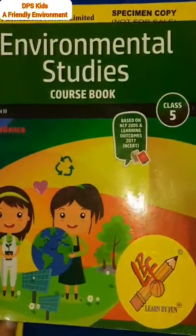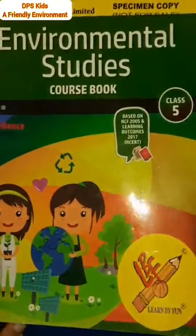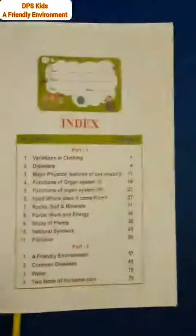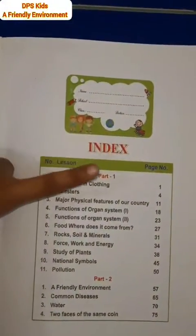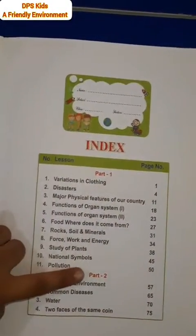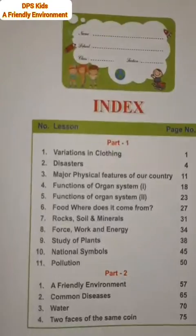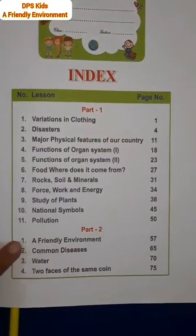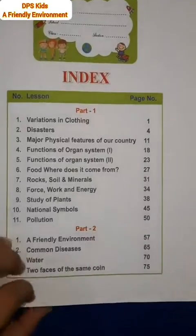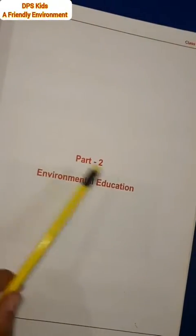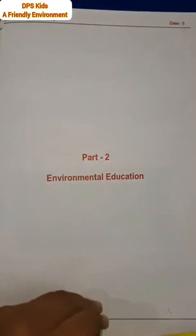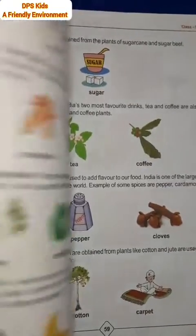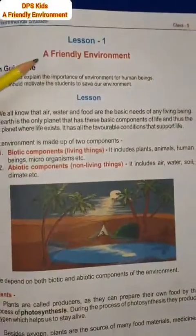Students, in your environmental studies book, there are two parts given — part 1 and part 2. We have already done three chapters of part 1. Now, we will do the first chapter of part 2. Part 2: Environmental Education. Lesson number 1: A Friendly Environment.